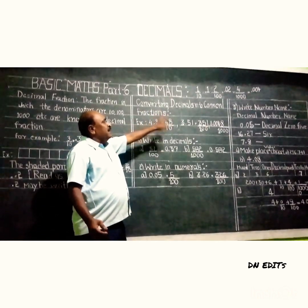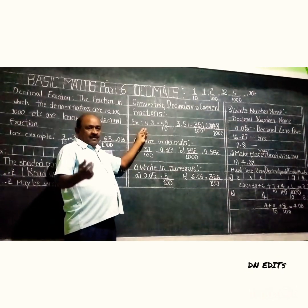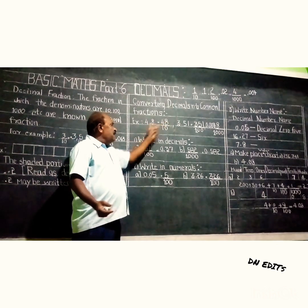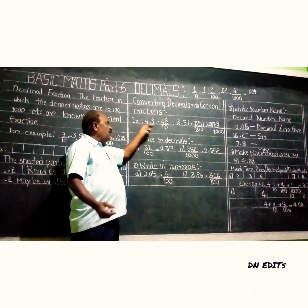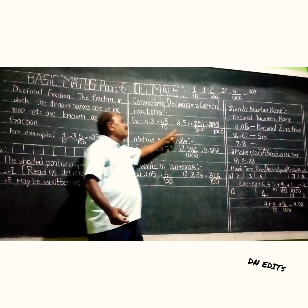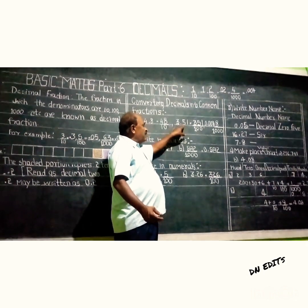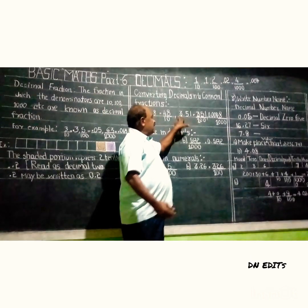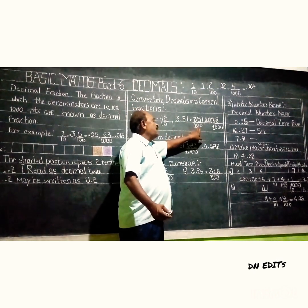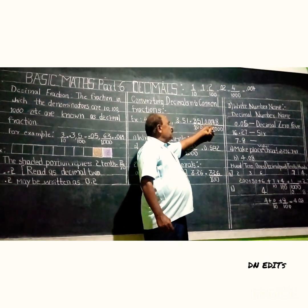Now I have given an example of conversion of decimals into the common fraction. For example, 4.8 equals 48 by 10 — that is the conversion of decimal to common fraction. For 3.51, after the decimal there are two numbers, so you write 351 in the numerator and 100 in the denominator: 351 by 100.